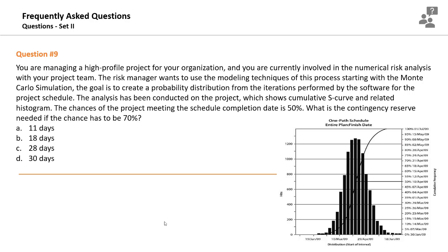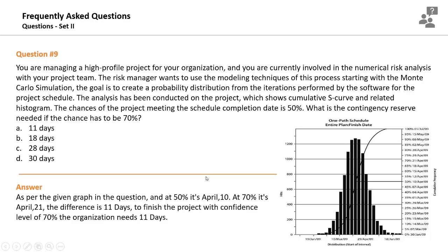The chances of the project meeting the schedule completion date are currently 50%. What's the contingency reserve needed if the chance should be 70%? This is a simple question about Monte Carlo simulation and confidence levels. Determine the date at 50% and the date at 70%; the difference between the two dates is the required contingency reserve. At 50% it is April 10th; at 70% it is April 21st — a difference of 11 days.